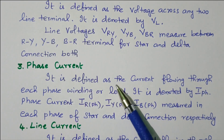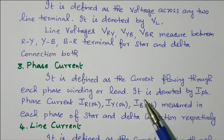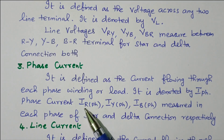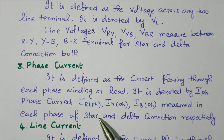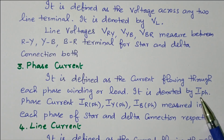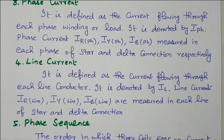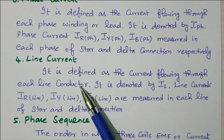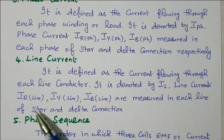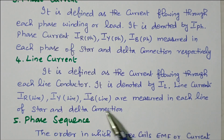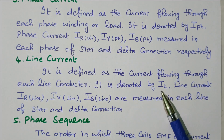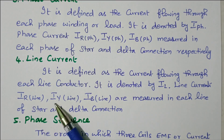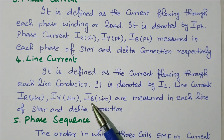Phase current is defined as the current flowing through each phase winding or the load, denoted IPH. Phase currents are IR phase, IY phase, and IB phase, measured in each phase of star as well as delta connection — generally represented as IPH. Line current is defined as the current flowing through each line conductor, denoted IL. Line currents IR line, IY line, and IB line are measured in each line of star and delta connection, generally represented as IL.